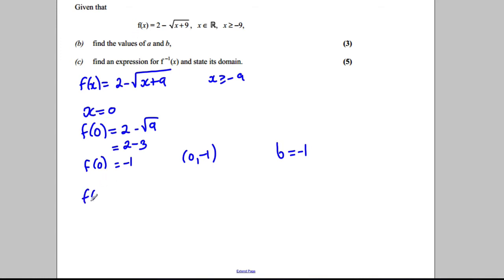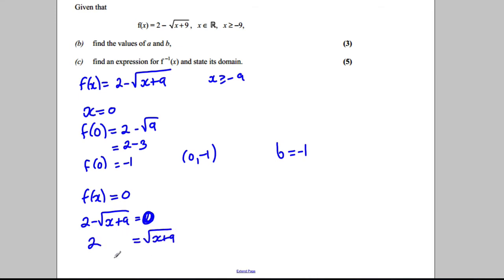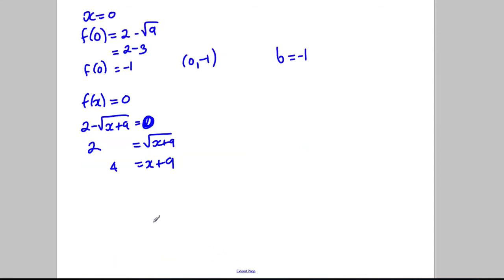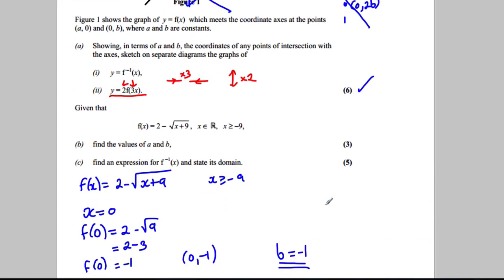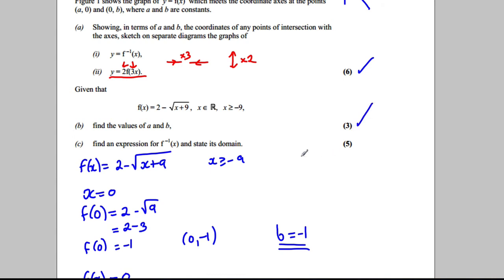For a, we solve f(x) = 0: 2 − √(x + 9) = 0. Adding √(x + 9) to both sides gives 2 = √(x + 9). Squaring both sides: 4 = x + 9. Taking away 9: x = −5. So (−5, 0) is where it crosses the x-axis, and therefore a = −5.